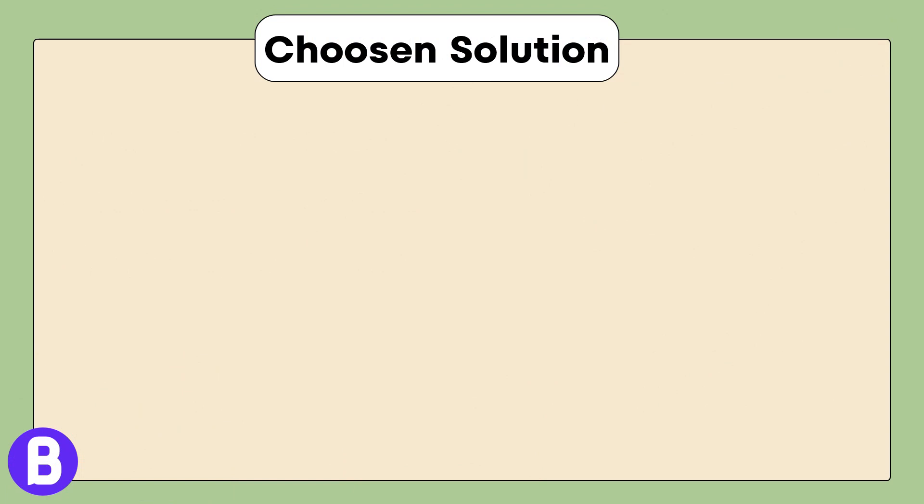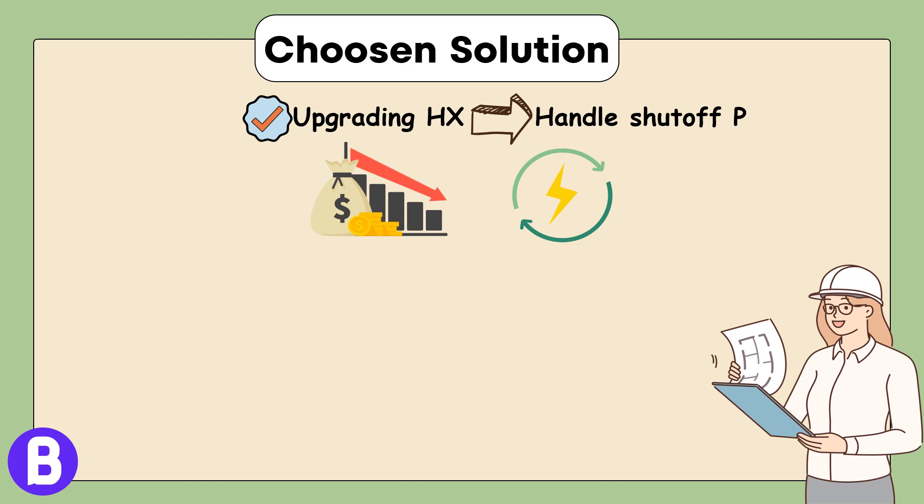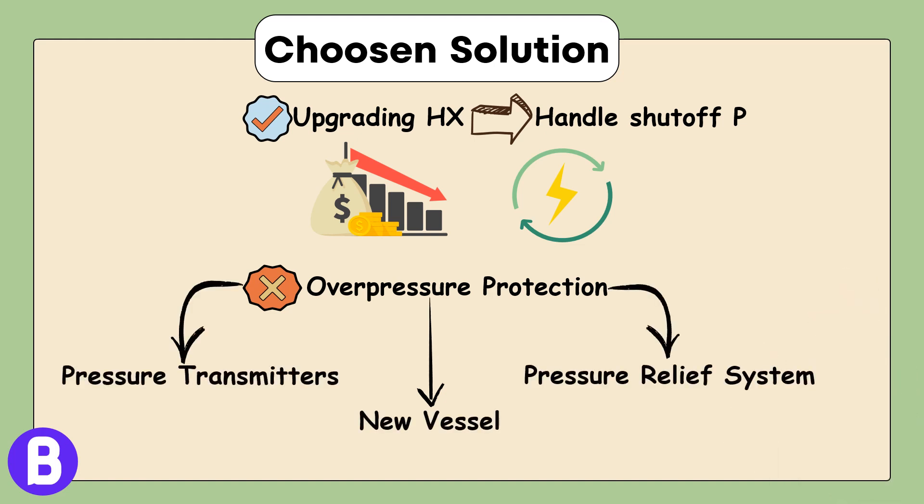After a cost-benefit analysis of the supplier's proposed modifications, it was determined that upgrading heat exchanger to handle the new shut-off pressure was the most cost-effective route. The cost was substantially lower than implementing overpressure protection involving a new vessel to receive the relief load, in addition to pressure transmitters and the pressure relief system.